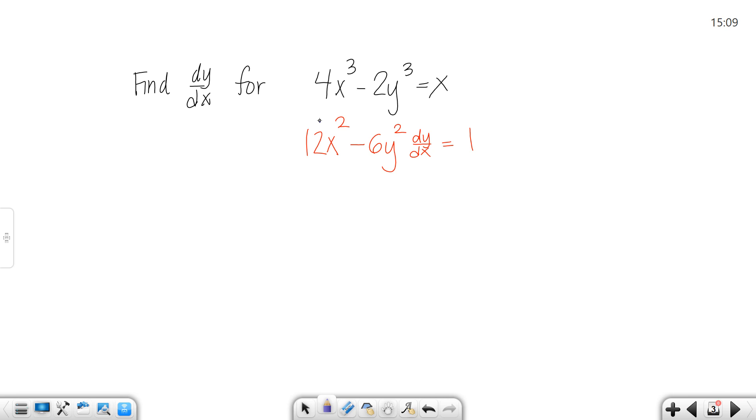That means I need to move the 12x² over. So -6y² dy/dx would equal 1 - 12x². To solve for dy/dx, I'm going to divide both sides by -6y². So dy/dx would actually equal (1 - 12x²) / (-6y²). And that's my answer.